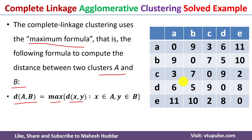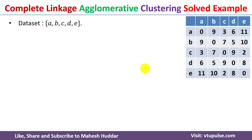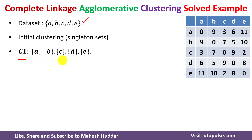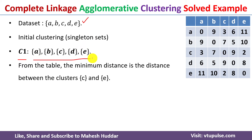Now I will start with the given dataset consisting of five data points. Initially we will consider each of these data points as a single cluster — the singleton cluster. That means in the first iteration we are having five clusters. Now what we need to do is from the given distance matrix, identify a pair of clusters whose distance is minimum.